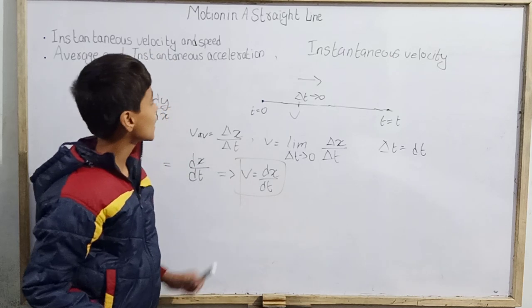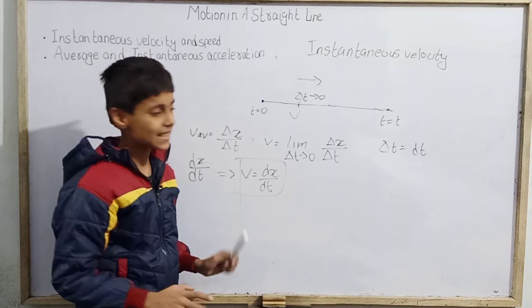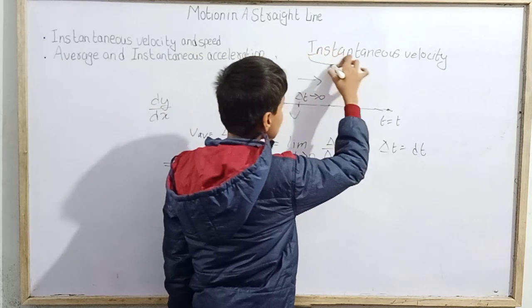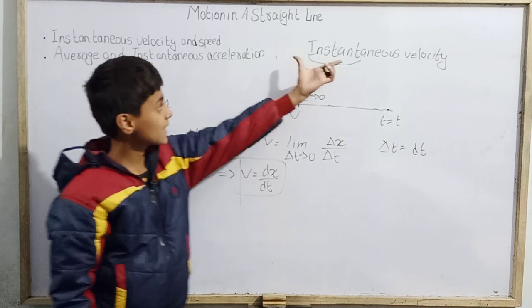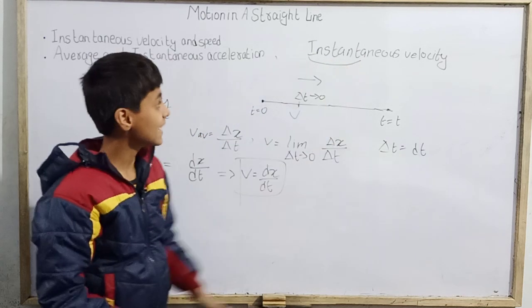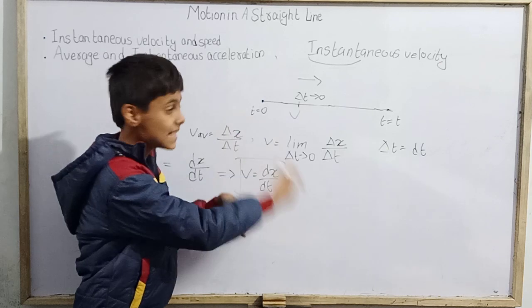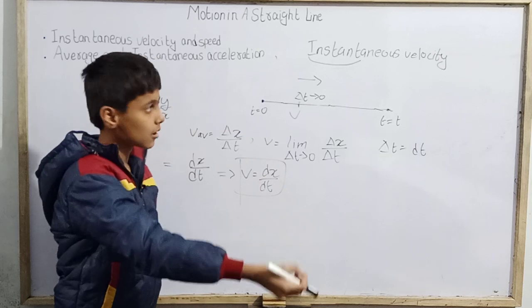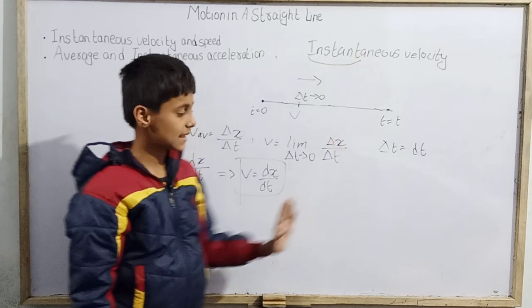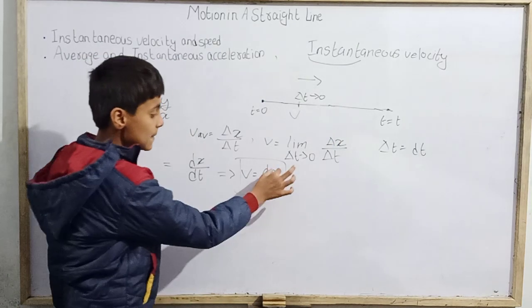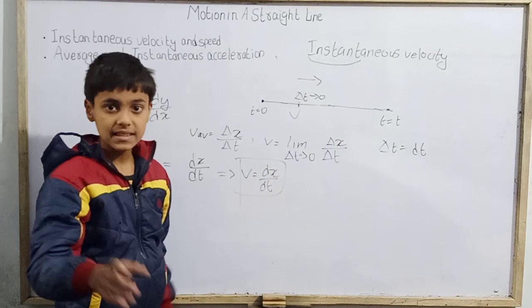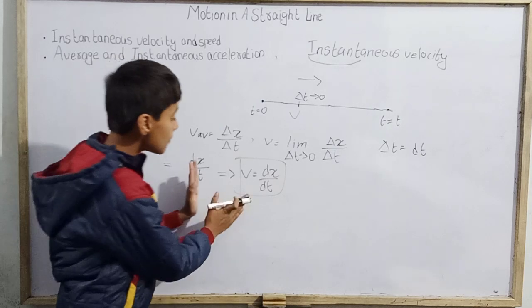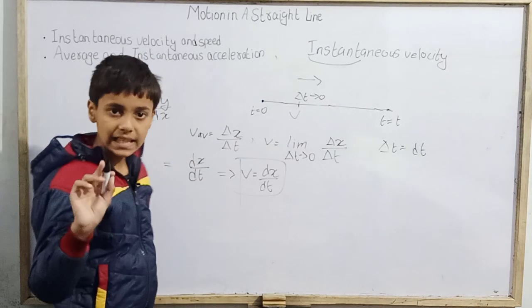Once we know instantaneous velocity, instantaneous speed follows quickly. In the name itself we can see 'instant' — showing velocity at a particular instant, not a full duration. The velocity of a particle at a particular instant is instantaneous velocity. Here x should be a function of time; if x is a function of time, differentiate x with respect to time to get the instantaneous velocity.